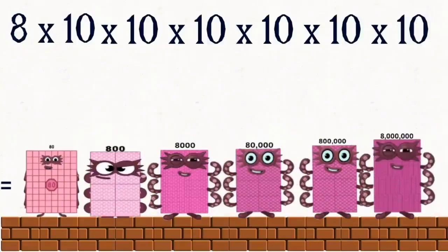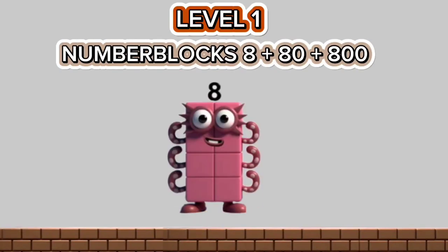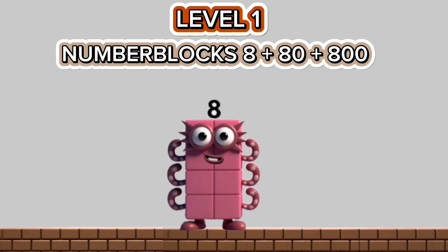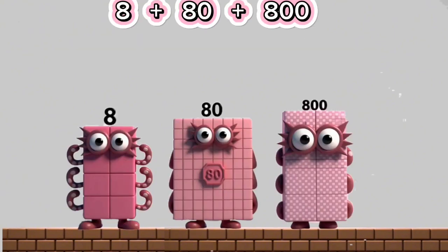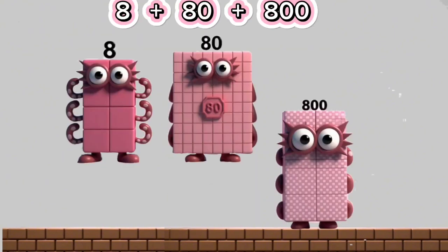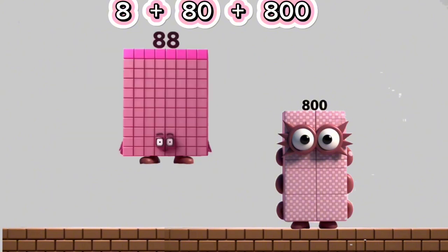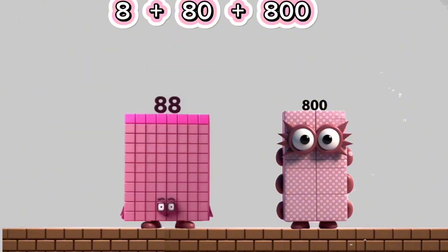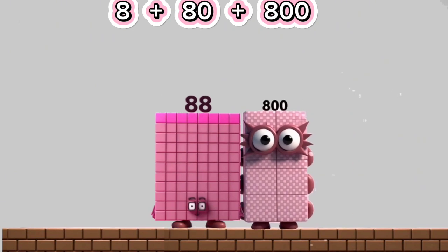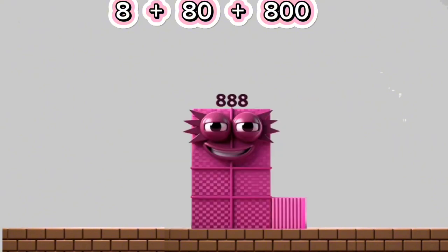And 8,000,000. Level 1: Number blocks. 8 plus 80 equals 88. 88 plus 800 equals 888.